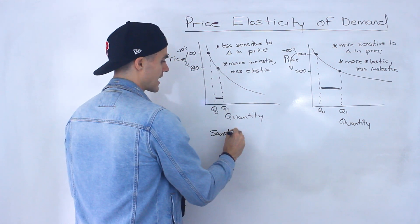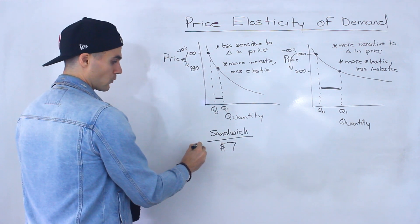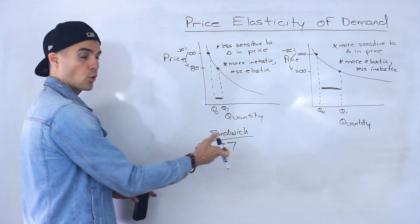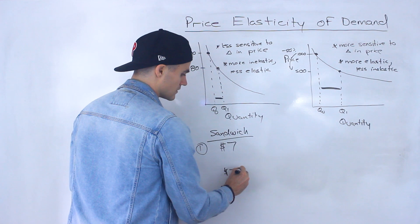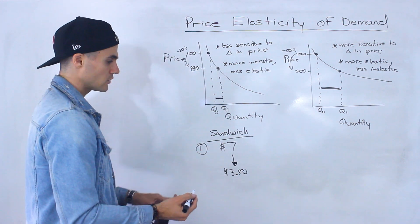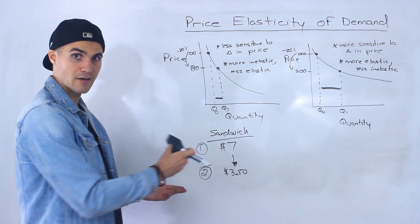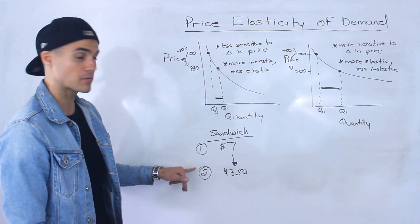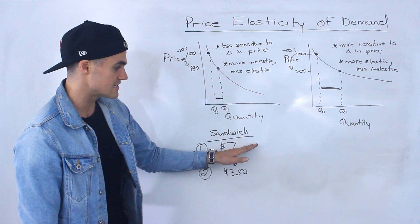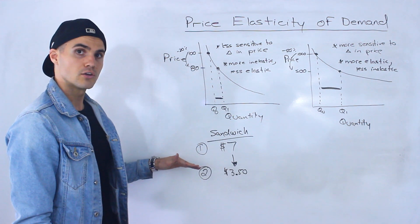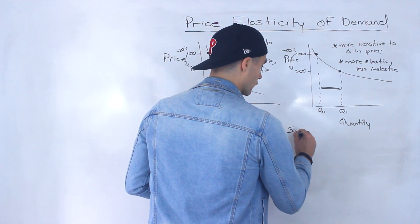Here's an example: let's say you're buying a sandwich every day for lunch for $7. You go in one day and there's a deal — now the sandwich is $3.50. Are you still going to buy it? Yes, because you were buying it for $7 anyway. In fact, at $3.50 you might buy two sandwiches — one for the next day, or maybe eat both that same day. So this 50% decrease in price still results in demand — you're still going to buy the sandwich.